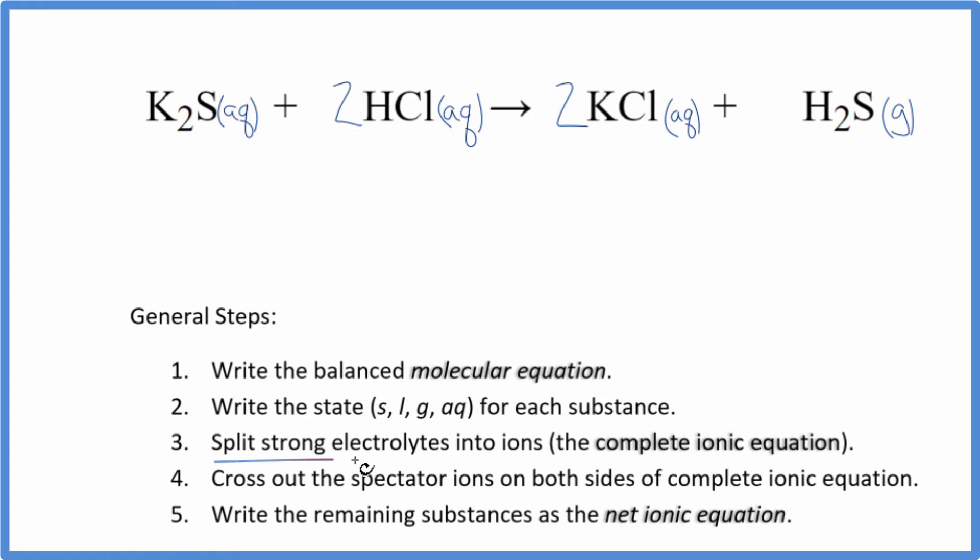Next we can split the strong electrolytes into their ions. This will give us the complete ionic equation. So potassium, that's in group 1 on the periodic table, 1 plus sulfide, 2 minus. So we have two potassium ions, 2K plus.